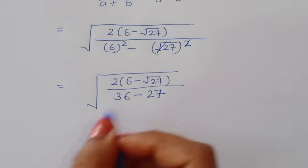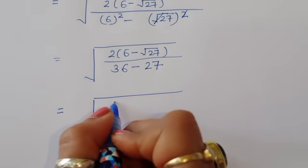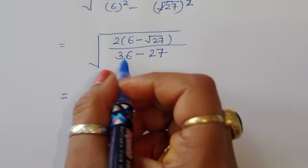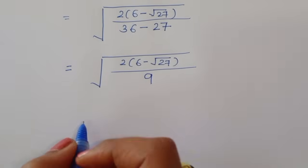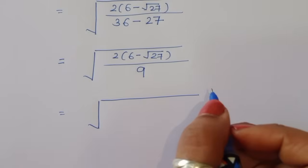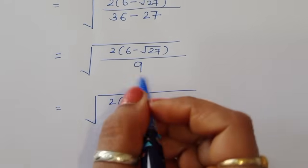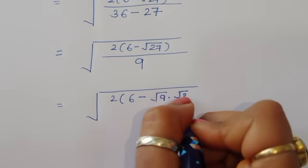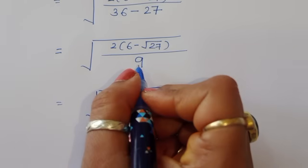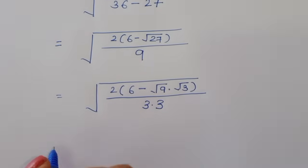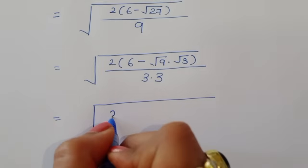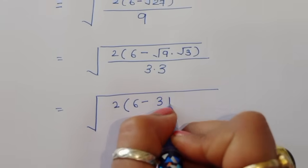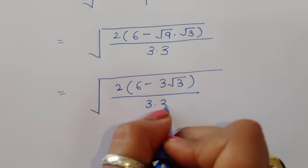So the denominator is 36 minus 27 = 9. Now for the numerator, we simplify square root of 27 as square root of 9 times 3, and since square root of 9 is 3, we write 3 times square root of 3. So we have 2 times (6 minus 3 square root of 3) divided by 9.